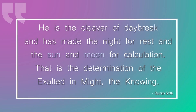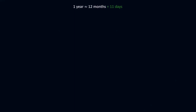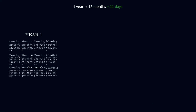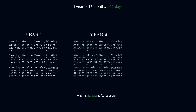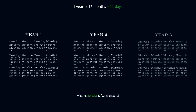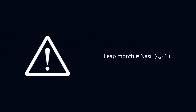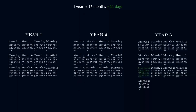'He is the cleaver of daybreak and has made the night for rest and the sun and moon for calculation. That is the determination of the exalted in might, the knowing.' So, how does the lunisolar calendar work? During a year, there are approximately 12 months and 11 days. So the first year, the calendar is 11 days short; the second year, it is missing 22 days. But a little before the third year, the missing days accumulate to 30 — equivalent to the duration of a month. Therefore, a leap month is added to compensate for the past missing days. The leap month is not the Nasi. So a lunisolar calendar is made up of regular years and leap years: regular years have 12 months, and leap years have 13.